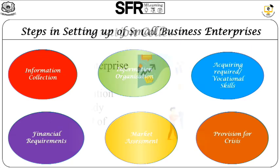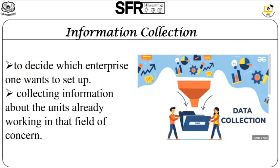The first step is information collection. It helps to design which enterprise one wants to set up, and also it helps to collect information about the units which we are going to work in the field. For collecting this information, we can get information from telephone directories and by visiting the register office of small scale units. By this collection of information, we can know about the pros and cons involved in setting up a small business enterprise.